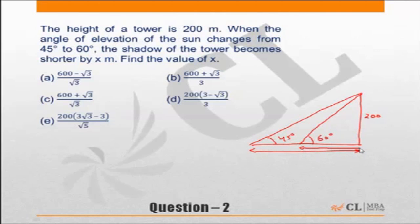The shadow becomes this one. So this distance is given as x. The shadow of the tower becomes shorter by x meters. Find the value of x. So we need to find the value of x. If the angle was 45 degrees, then the total distance was also 200. When this is 200, then at 60 degrees it is going to be...